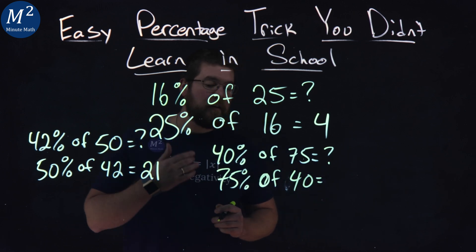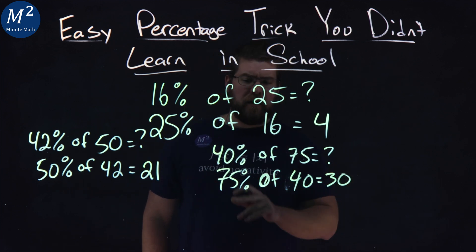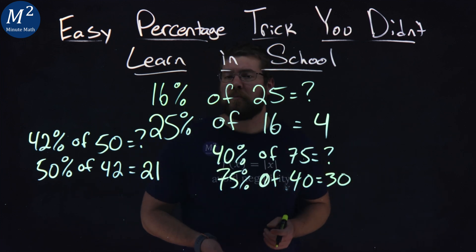Well, 75% is three quarters, right? Three quarters of 40 is just going to be good old 30. And so 40% of 75 is 30.